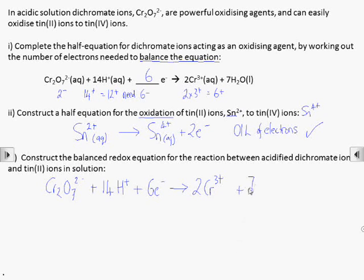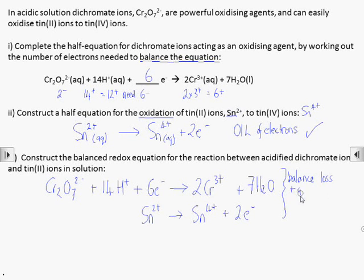To construct the balanced redox equation, we need to have the same number of electrons lost in the oxidation as are gained in the reduction. So we can see that the reduction of dichromate is accompanied by a gain of 6 electrons, while the oxidation of tin² releases 2 electrons.